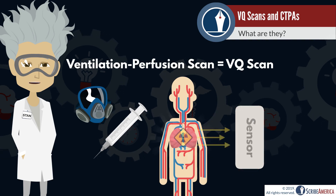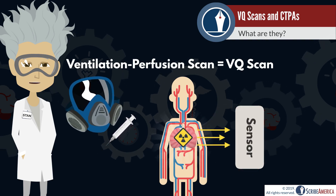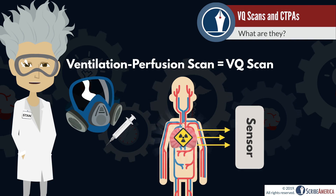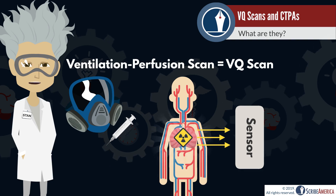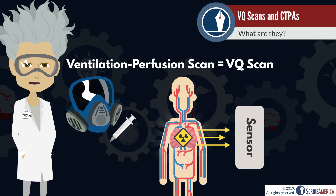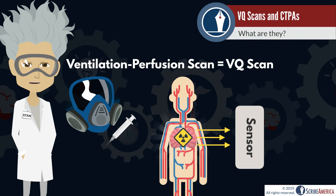The ventilation phase of the test starts with the patient inhaling an aerosol containing a radioactive compound. A gamma camera detects the radioactive gas as it flows through the lungs and allows the clinician to assess how well air is flowing or ventilated.